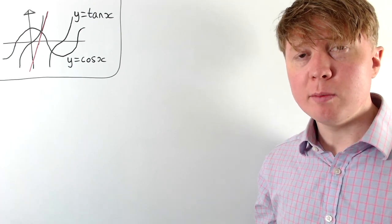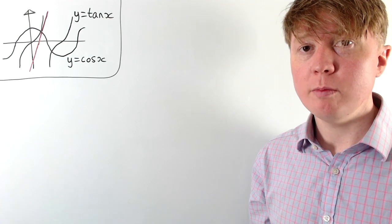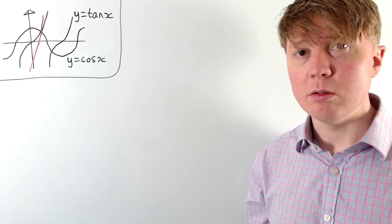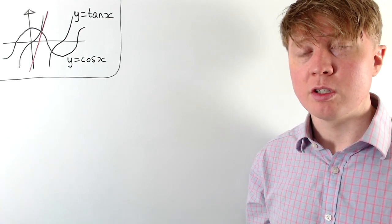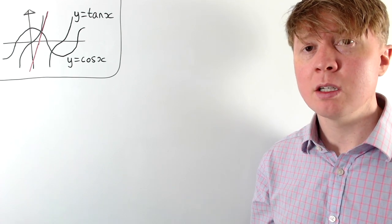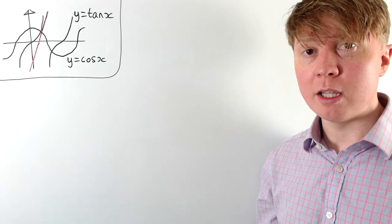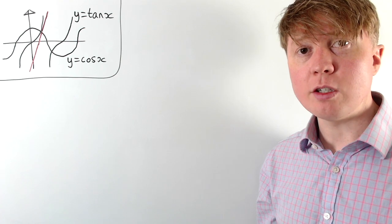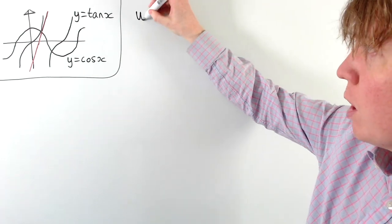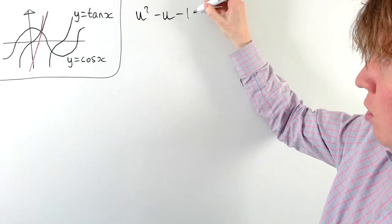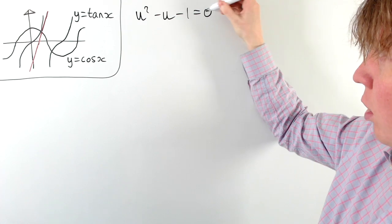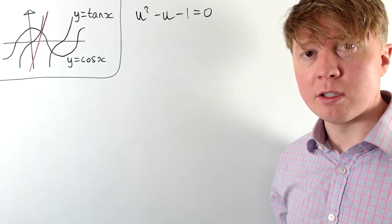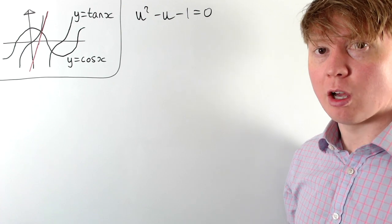This seems really mysterious — where does the golden ratio come from? It turns out that this problem is set up so that the derivative of tan x at the point where the two functions intersect each other satisfies a certain quadratic equation: u squared minus u minus 1 equals 0. One of the solutions to this equation is the golden ratio.